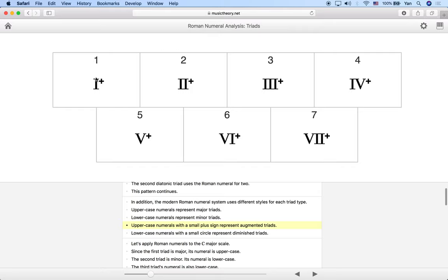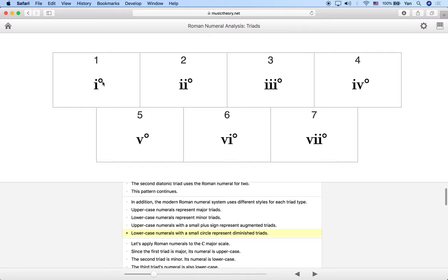If you use an uppercase numeral with a small plus sign to the right, this represents an augmented triad. We use uppercase because an augmented triad has a major third at the bottom, but the outer interval is an augmented fifth rather than a perfect fifth — that plus symbolizes that extra half step. Finally, a lowercase numeral with a small circle represents a diminished triad, and we use lowercase because a diminished triad has a minor third at the bottom.